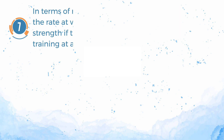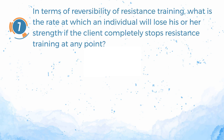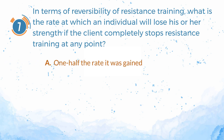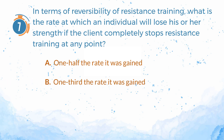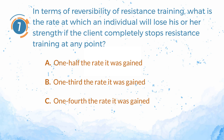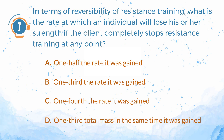Number 7. In terms of reversibility of resistance training, what is the rate at which an individual will lose his or her strength if the client completely stops resistance training at any point? A. One half the rate it was gained. B. One third the rate it was gained. C. One fourth the rate it was gained. D. One third total mass in the same time it was gained.